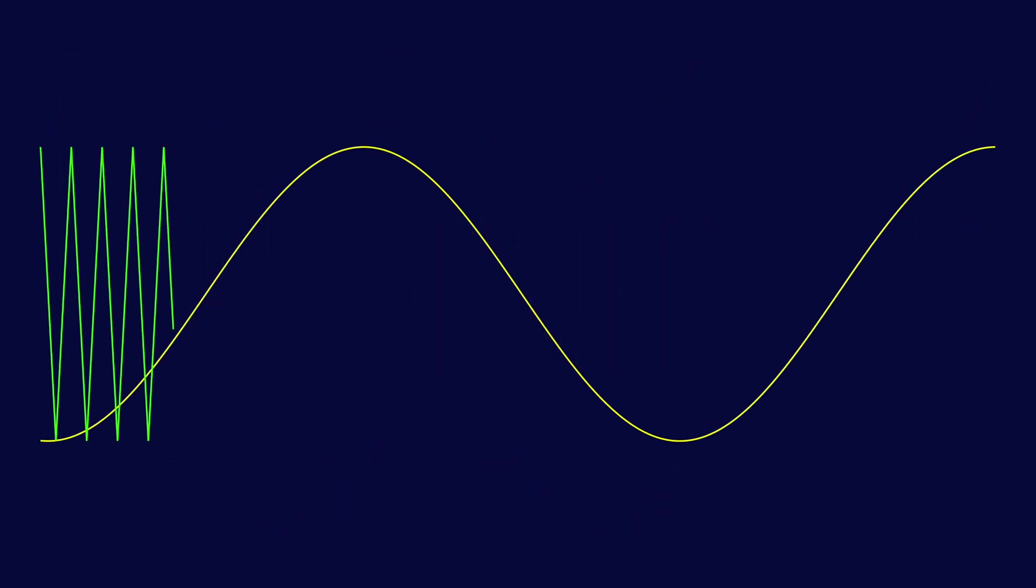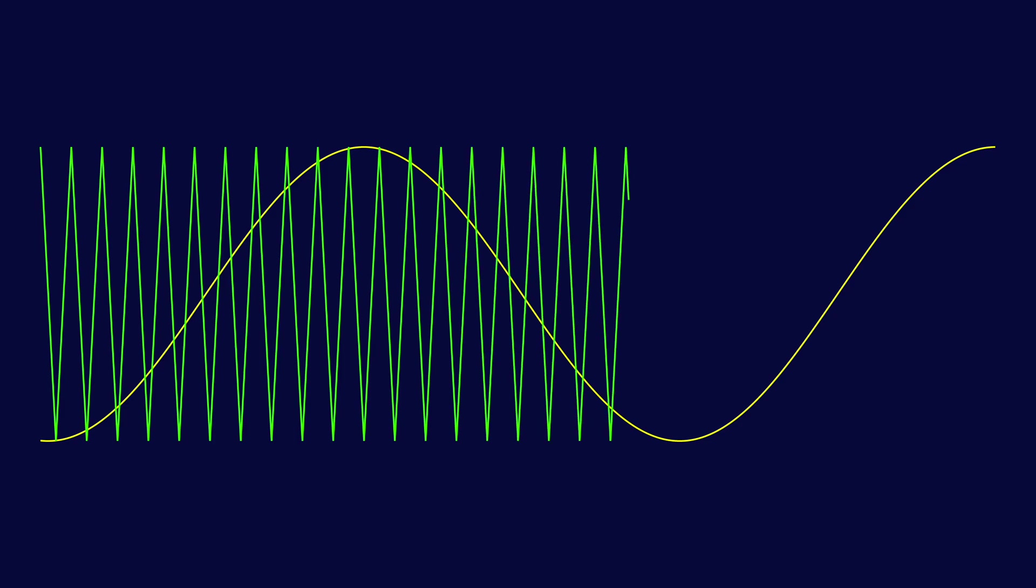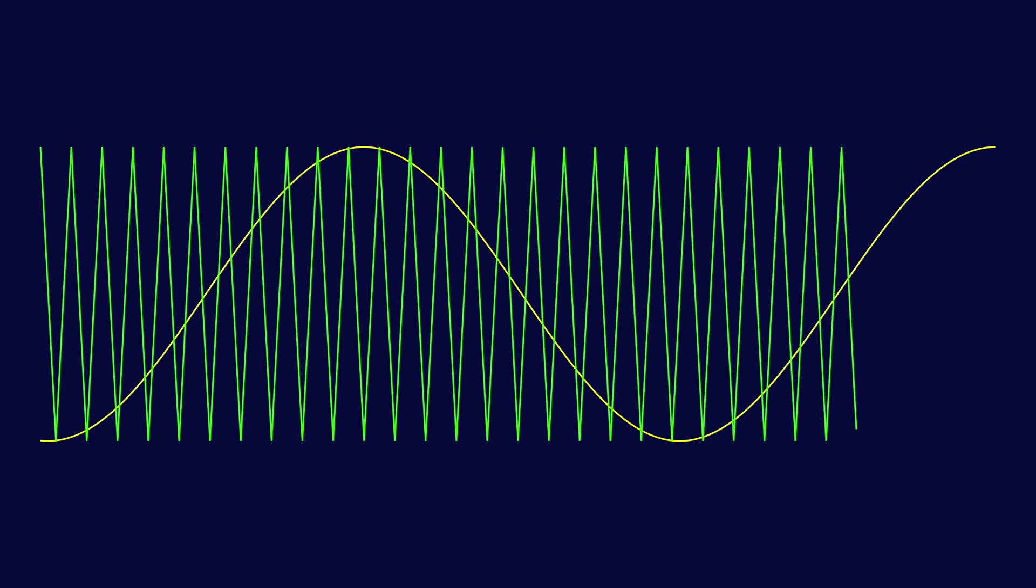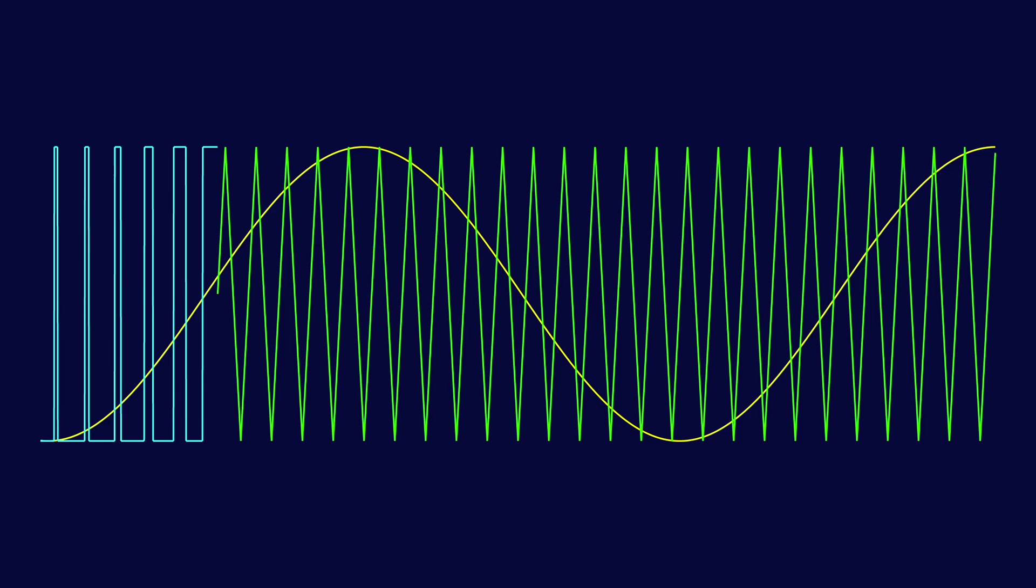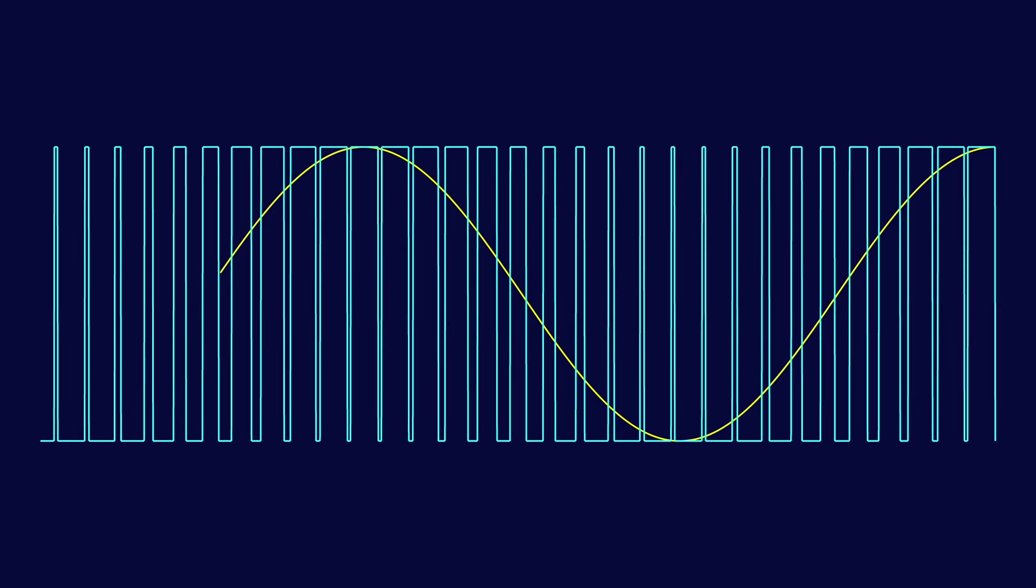The next animation shows how you can create a PWM signal. Once again we have an input sine wave. To generate the PWM signal we compare the input signal with a high frequency triangle wave. When the signal is higher we output a high and when it is lower we output a low.